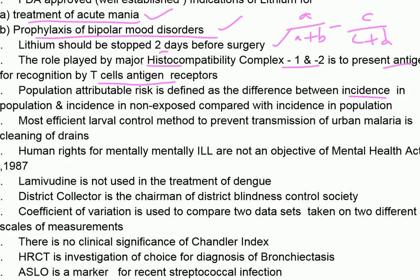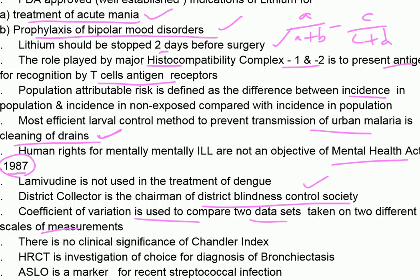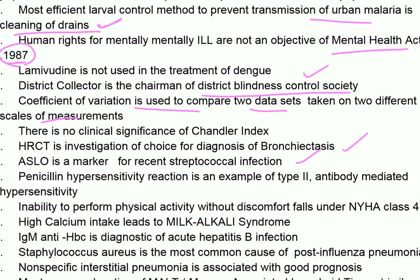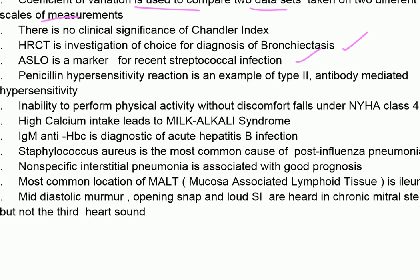The most efficient larva control method to prevent transmission of urban malaria is cleaning of drains. Human rights for the mentally ill are not an objective of the Mental Health Act 1987. Lamivudine is not used in the treatment of dengue. District collector is the chairman of the District Blind Control Society. Coefficient of variation is used to compare two data sets on different scales of measurement. HRCT is the investigation of choice for bronchiectasis.